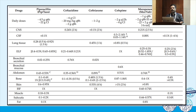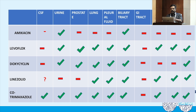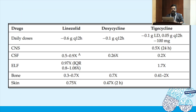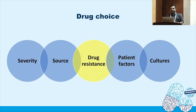Some drugs have excellent CNS concentration while others concentrate well in the epithelial lining fluid, so you must choose based on the source of infection. For example, linezolid has poor urinary concentration and is not a good choice for urinary tract infections. Similarly, polymyxin B has poor urinary excretion and is not a good choice for UTIs. You should have a basic knowledge of tissue concentration for different antibiotics.